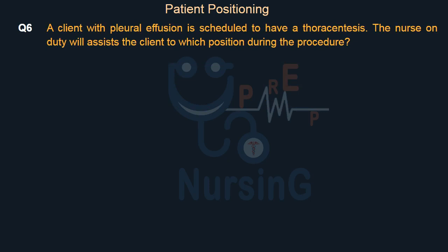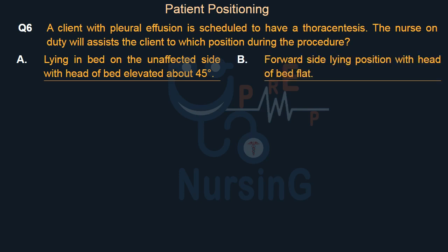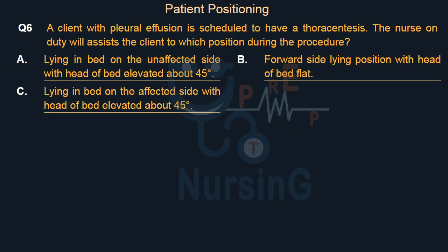A client with pleural effusion is scheduled to have a thoracentesis. The nurse on duty will assist the client to which position during the procedure? Option A, lying in bed on the unaffected side with head of bed elevated about 45 degrees; Option B, forward side lying position with head of bed flat; Option C, lying in bed on the affected side with head of bed elevated about 45 degrees; Option D, supine position with both arms extended.